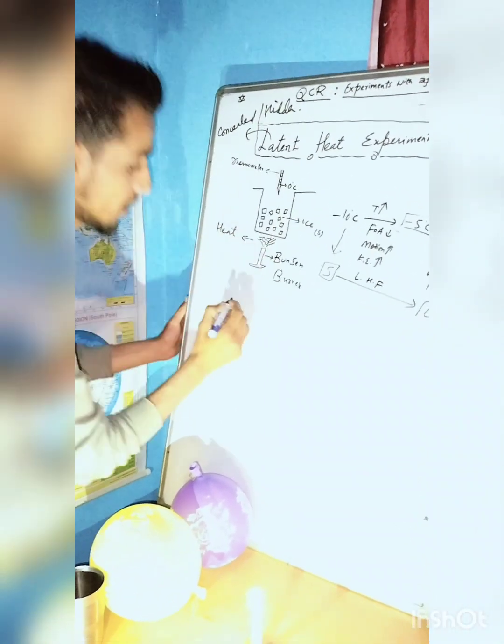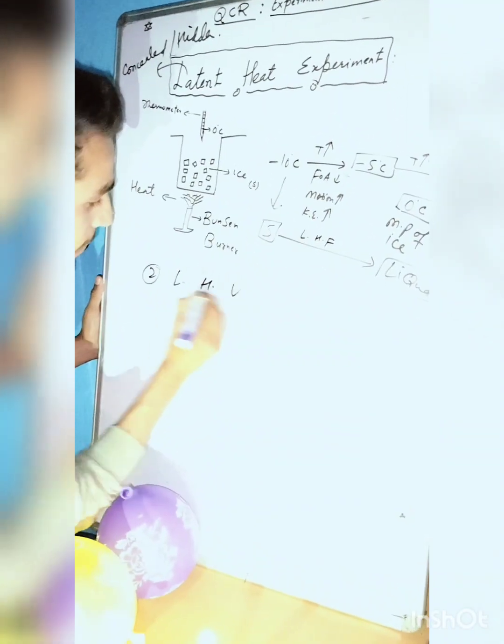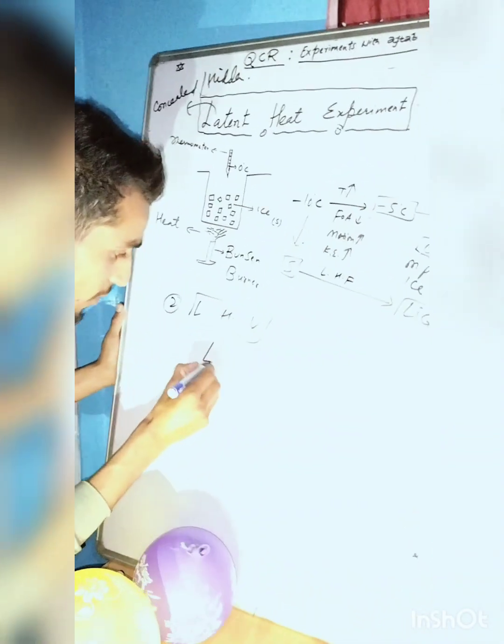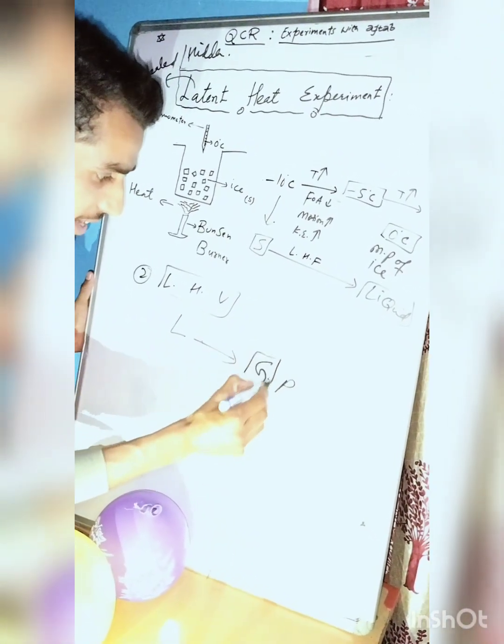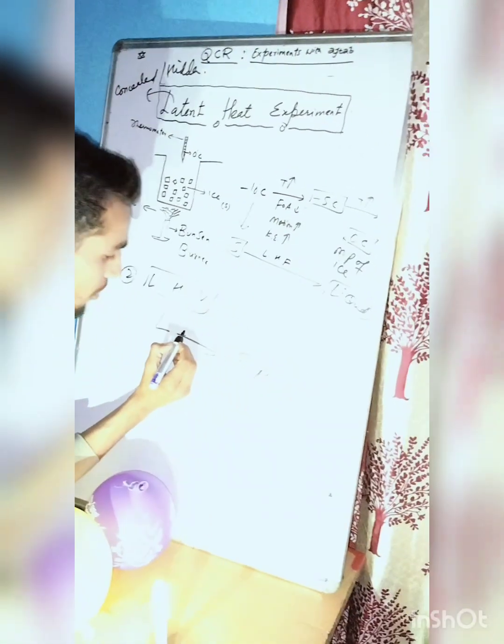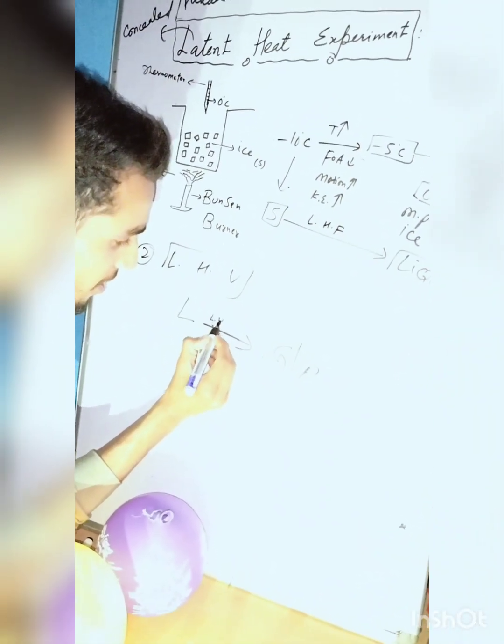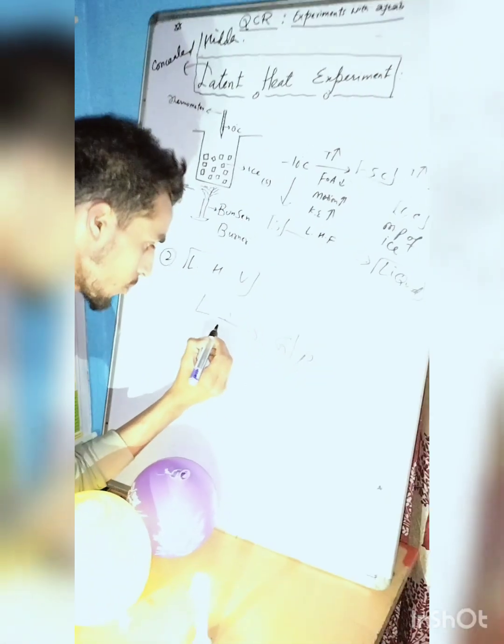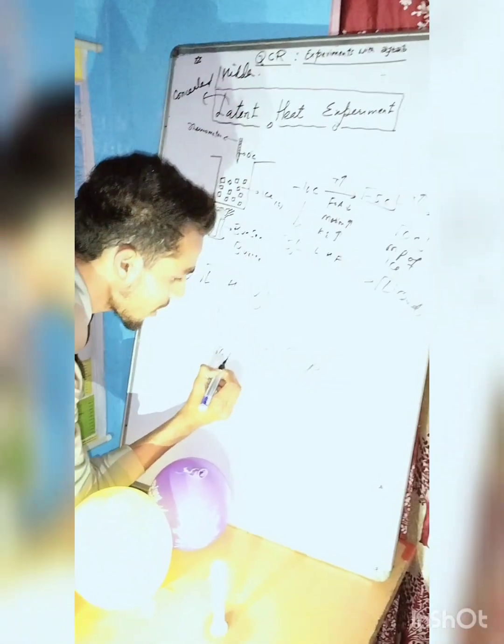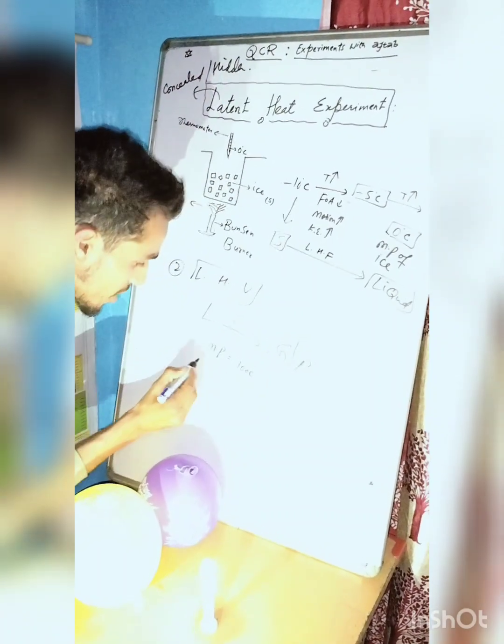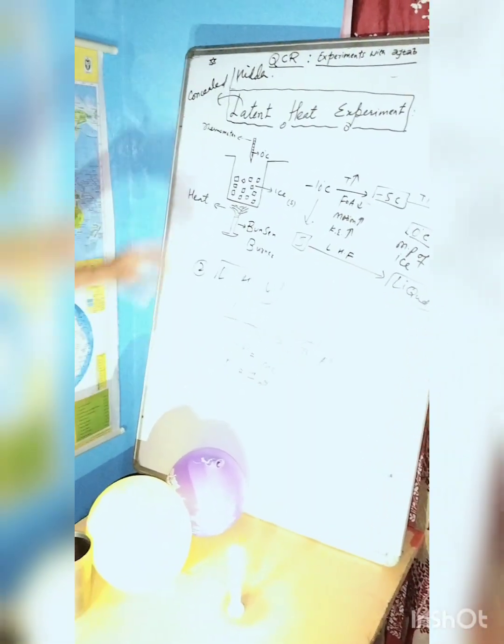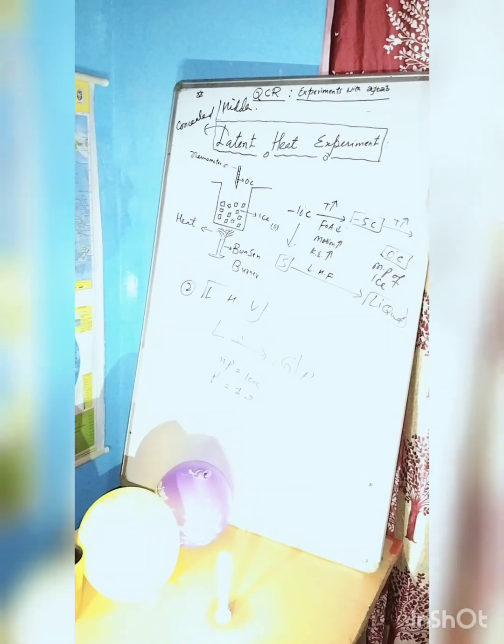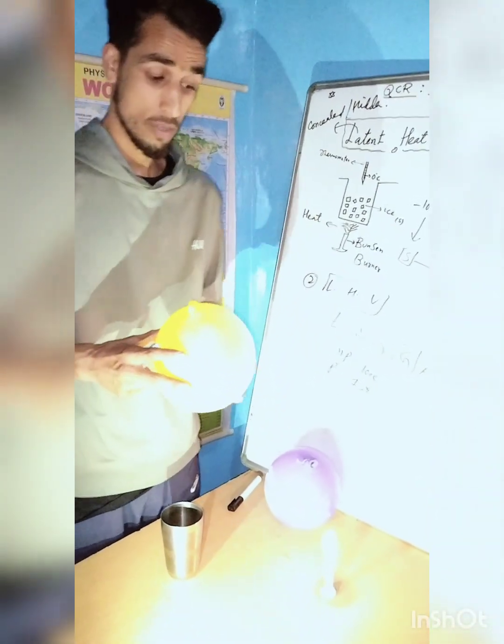The same phenomenon happens with latent heat of vaporization, where liquid particles are converted into gaseous particles. This occurs at the boiling point of water, which is 100 degrees Celsius, at one atmosphere pressure. Now I am going to show a demonstration.